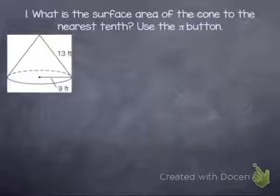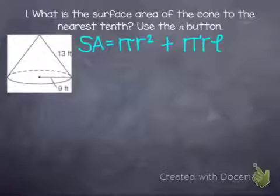So the first thing that we need is our formula for the surface area of a cone. The formula for that is pi r squared, which is going to find the area of our base, plus pi times radius times the slant height. That cursive L represents slant height.